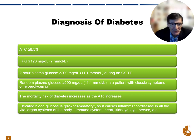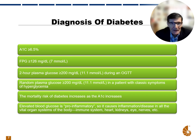Elevated blood glucose is pro-inflammatory — it causes inflammation and disease in the vital organ systems of the body: the immune system, heart, kidneys, eyes, nerves, etc.